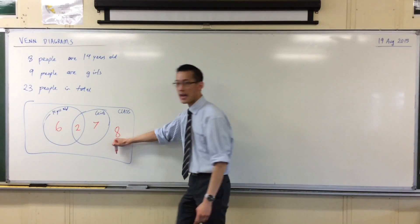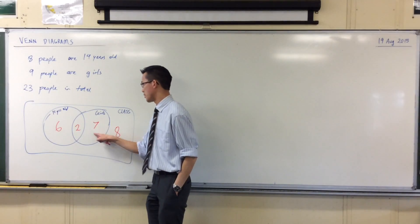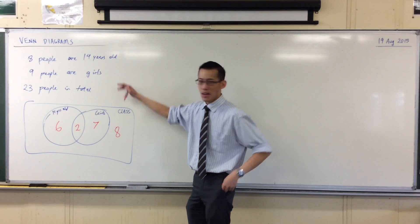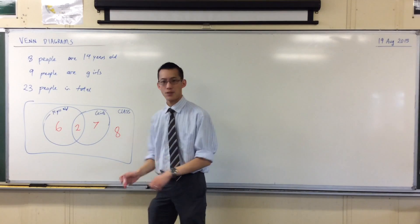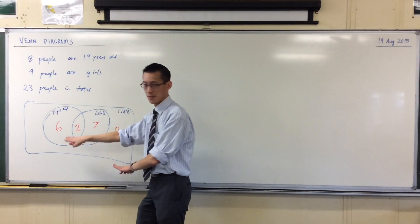That's right, these eight people are neither girls nor 14 years old, so they can't be in either of these circles. They have to be outside. They're still in the class, right? So I can see if I add all of these up I should get my 23. So let's just quickly, before we leave off this, and if you have another color this will be easier for you, let's label what each of these numbers are so we know what's going on.